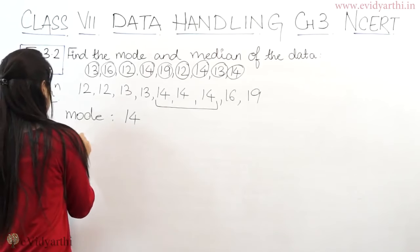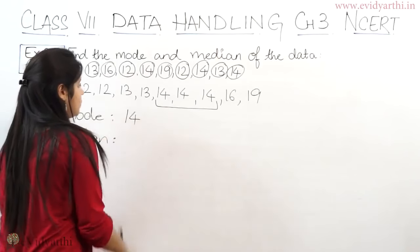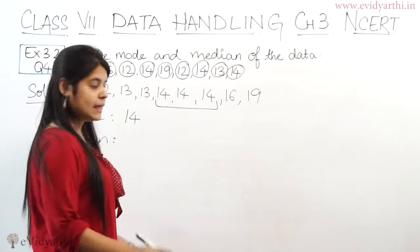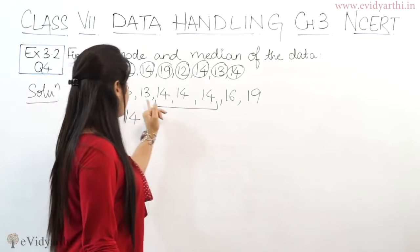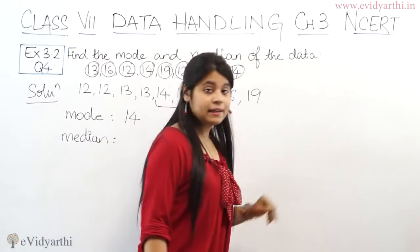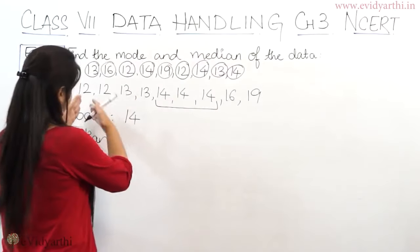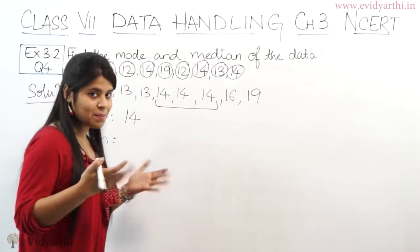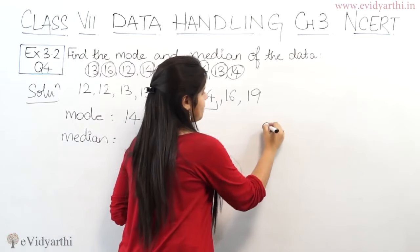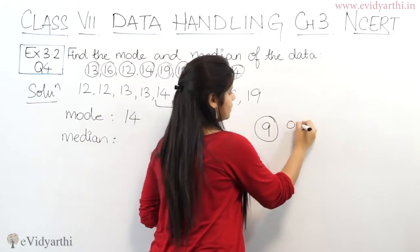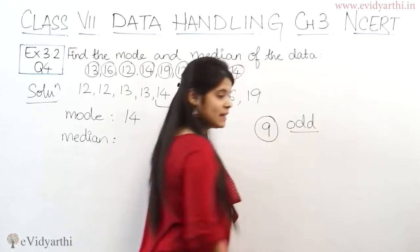Then we have median. Again, median means middle number. So one, two, three, four, five, six, seven, eight, nine. Nine numbers in total. Now let's see the middle number. Total nine is an odd number.